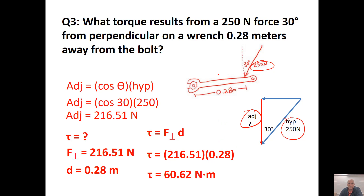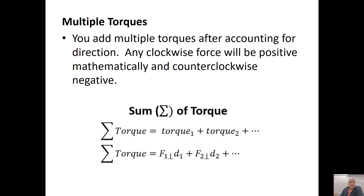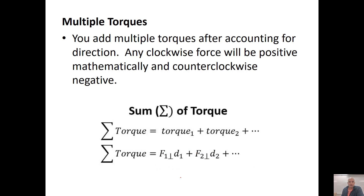Torque is a vector, so it's important to have a direction if you know it — this would have rotated clockwise. When adding multiple torques together, you have to account for whether each is clockwise (positive) or counterclockwise (negative). Once you've assigned signs, you simply add all the torques in the scenario together.